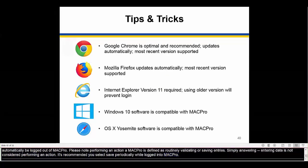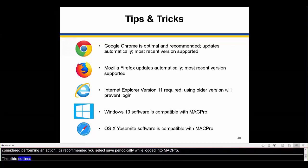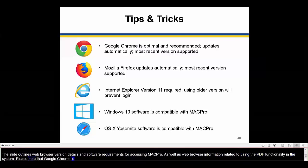This slide outlines web browser version details and software requirements for accessing MACPro, as well as information related to using the print to PDF functionality. Please note that Google Chrome is the optimal web browser for use with MACPro, and Internet Explorer users must have version 11 to access MACPro.